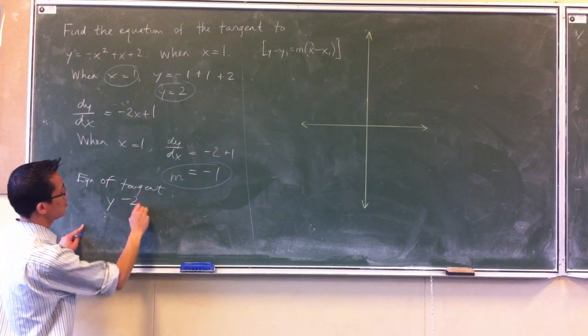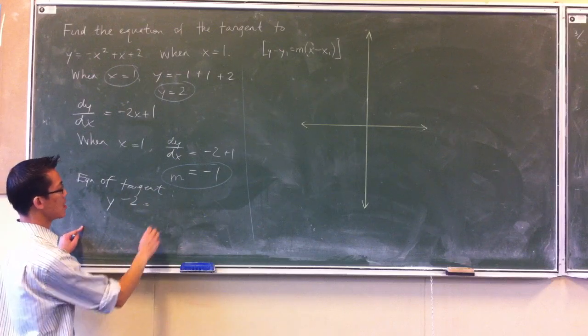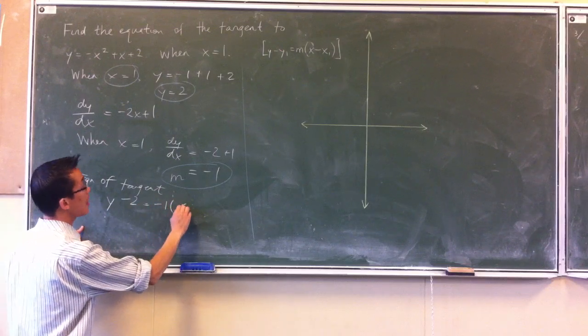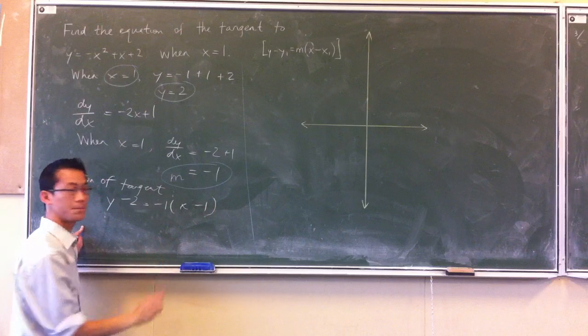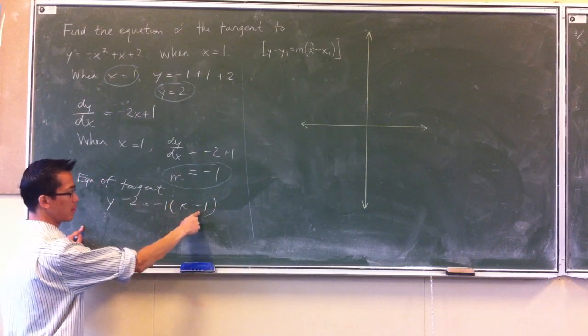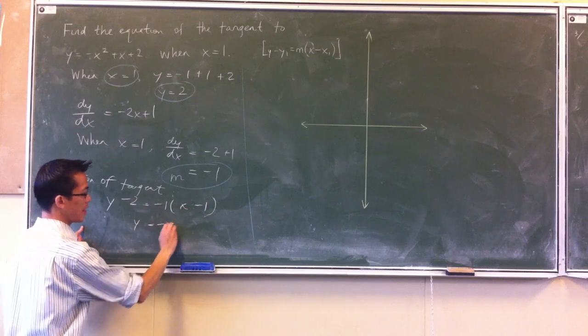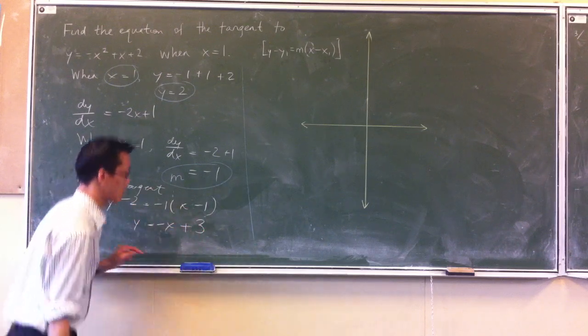y minus 2, there's my y1 value, equals minus 1 times x minus 1. So you can see if I bring this, it's going to be minus x plus 1, and if I bring that 2 over, this is going to be minus x plus 3. Now I'm done.